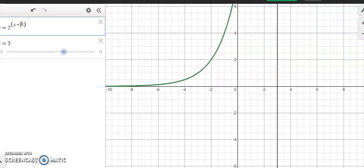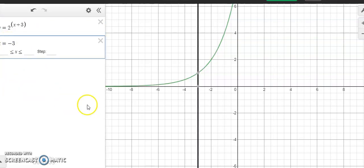If I change this to a plus 3, the graph is instead pulled to the left with the point that was originally on the y-axis now lining up with negative 3.